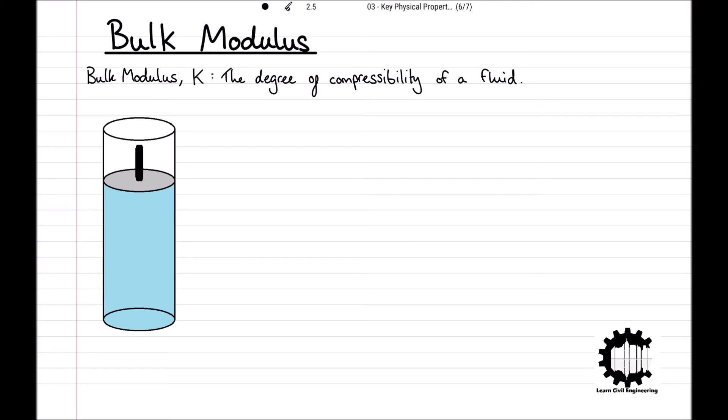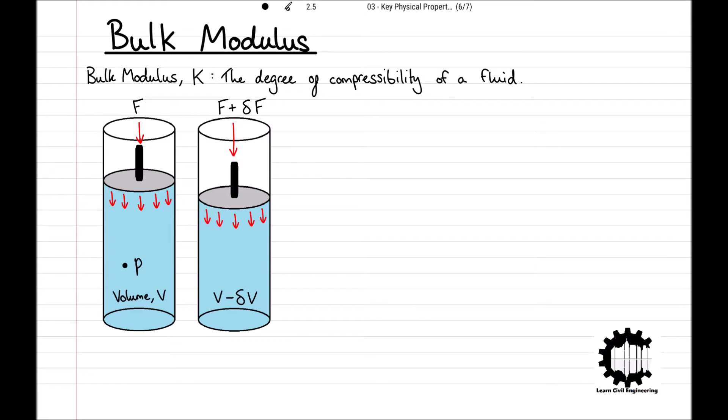Consider the situation of a simple fluid filled piston. The piston head initially applies a downward normal force of magnitude F to the fluid of volume V inside the piston, and at some interior point, indicated by the dot, the fluid has pressure P. The applied force is then increased to F plus change in F, which compresses the fluid, reducing its volume to V minus change in V.